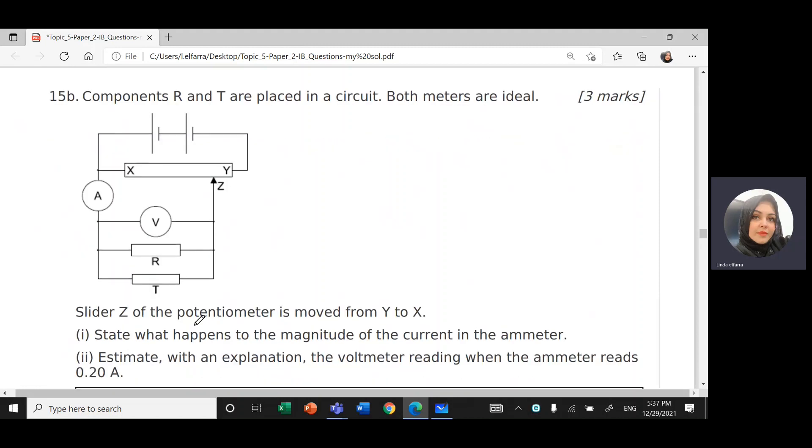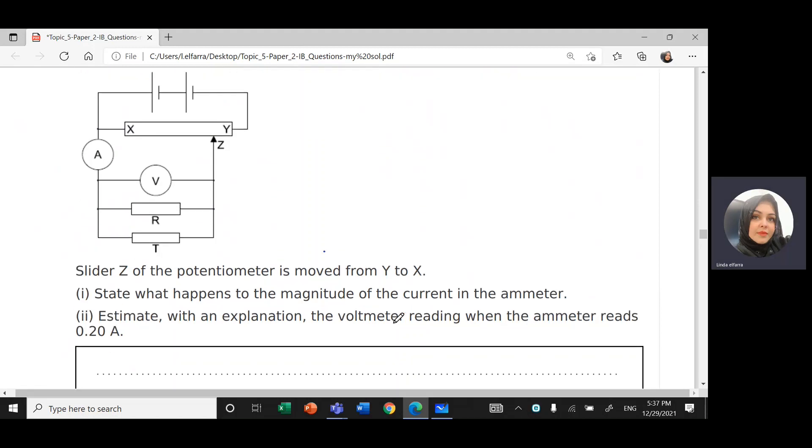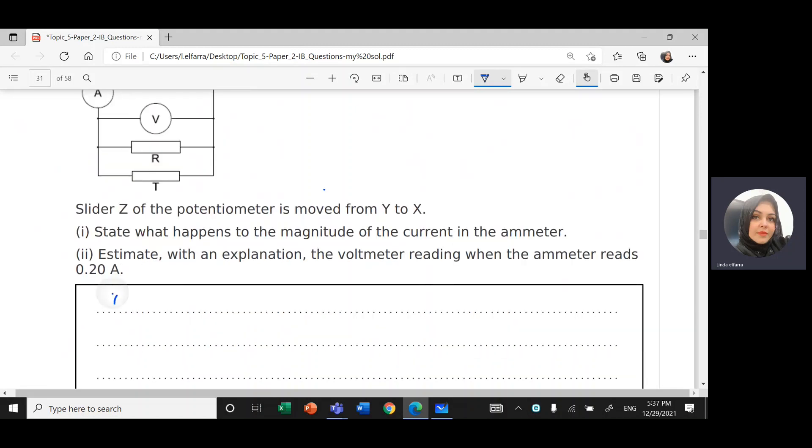So I have a slider Z of the potential meter is moved from Y all the way till X. So I'm increasing the value of the whole resistance. If I increase the value of the resistance, I'm decreasing the current. If the resistance is extremely high, that means the current will be zero. So state what happened to the magnitude of the current of the meter. The current will be zero.